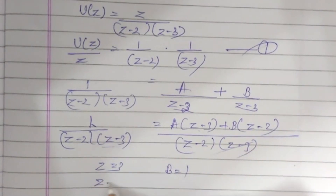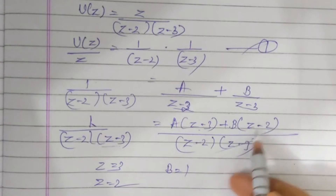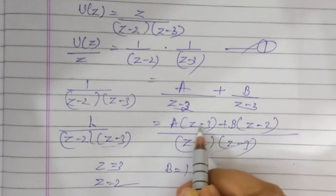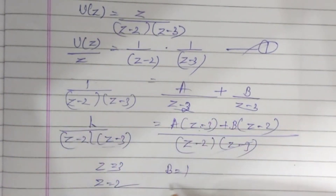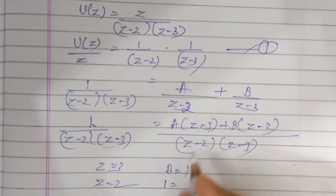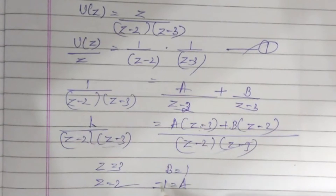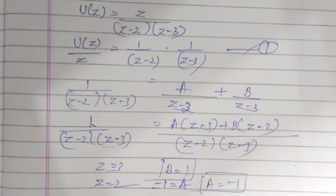When Z equals 2, the B-term becomes 0, and we get 1 equals A times (2 minus 3), which is minus 1 times A equals 1. So A equals minus 1.